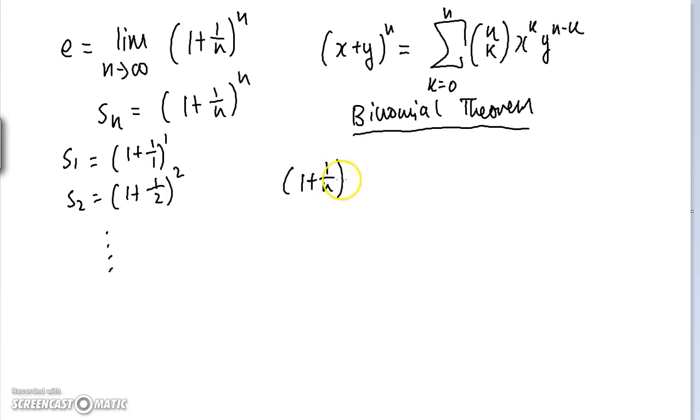Just applying the formula directly, we get this is equal to K equals 0 to N of N choose K, 1 to the power N minus K, 1 over N to the power K. Well, 1 to the power anything is just 1 at all times, so we can in fact take absolutely no notice of it. The sequence looks a lot nicer like this—I mean, the series looks a lot nicer like this. It's just 1 over N to the power K.